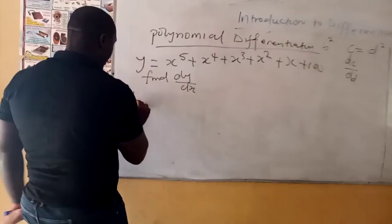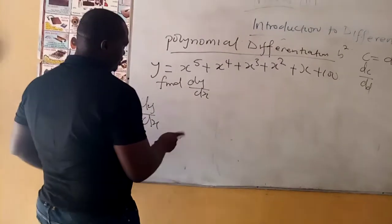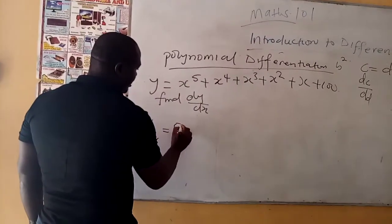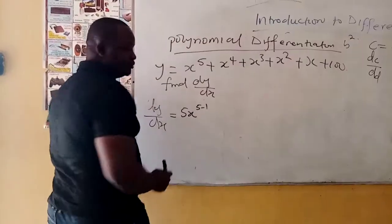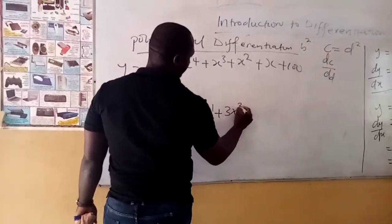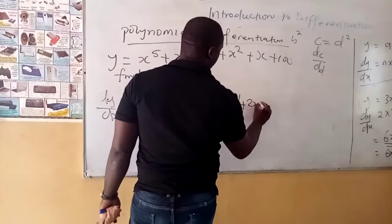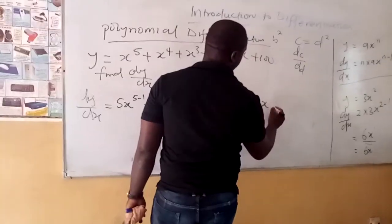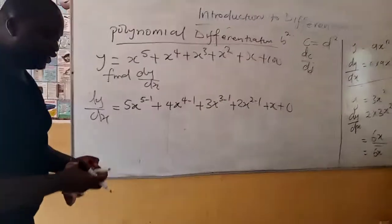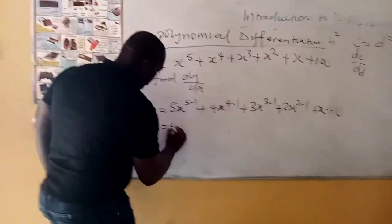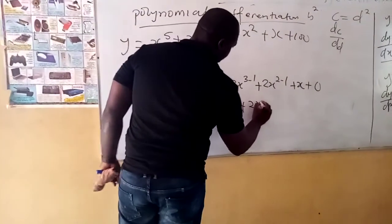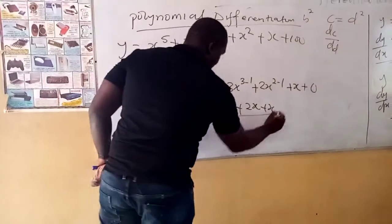So dy over dx is equal to: 5 times x to the power of 5 minus 1, plus 4 times x to the power of 4 minus 1, plus 3 times x to the power of 3 minus 1, plus 2 times x to the power of 2 minus 1, plus x, plus 0 — because the differentiation of a constant is 0. This gives 5x to the power 4, plus 4x cubed, plus 3x squared, plus 2x, plus x, and that is your answer.